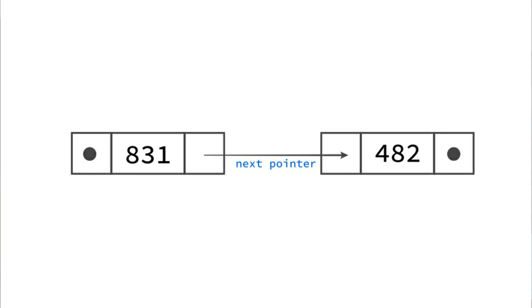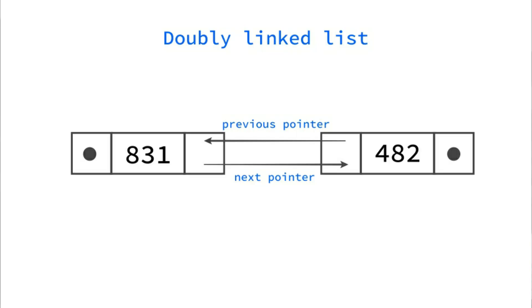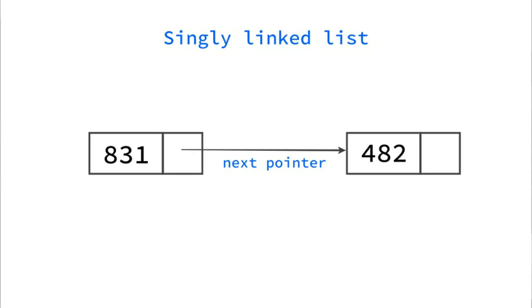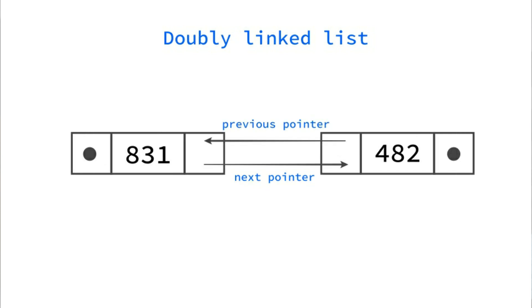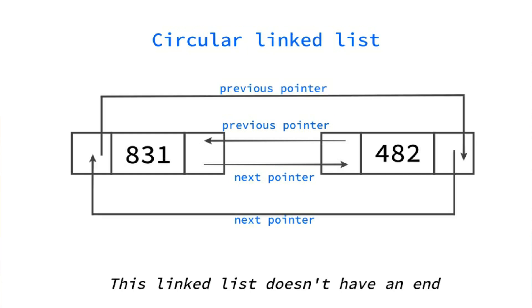One node points to the next node and sometimes, depending on the kind of linked list, to its previous node as well. So a node can have two pointers — one pointing to the next node and one pointing to the previous node, plus its own value. There are different kinds of linked lists: the singly linked list, which just points to the next node; the doubly linked list, which points to both the next and the previous node; and the circular linked list, where the last node's next pointer points back to the first node, so it's always in a cycle.